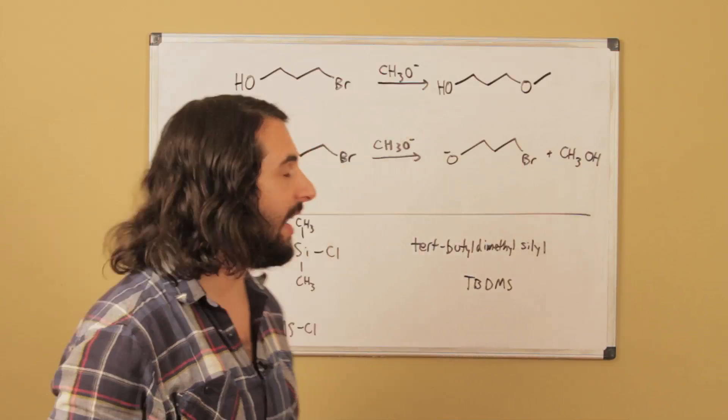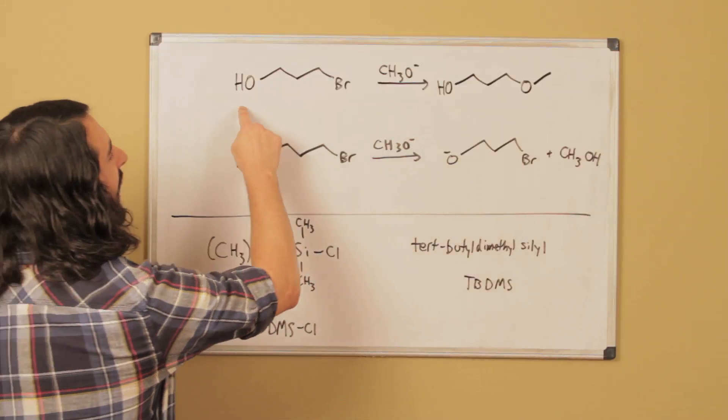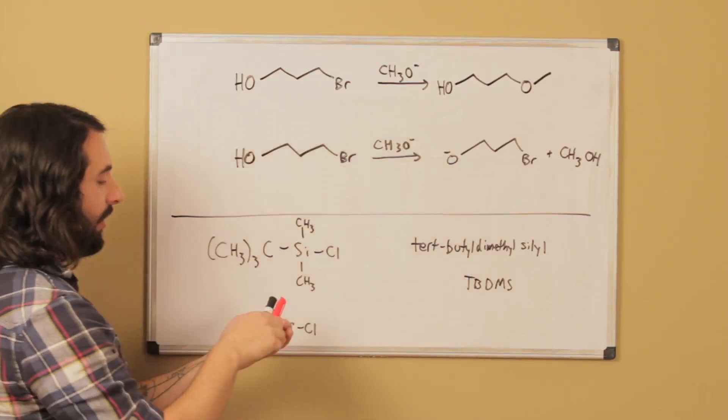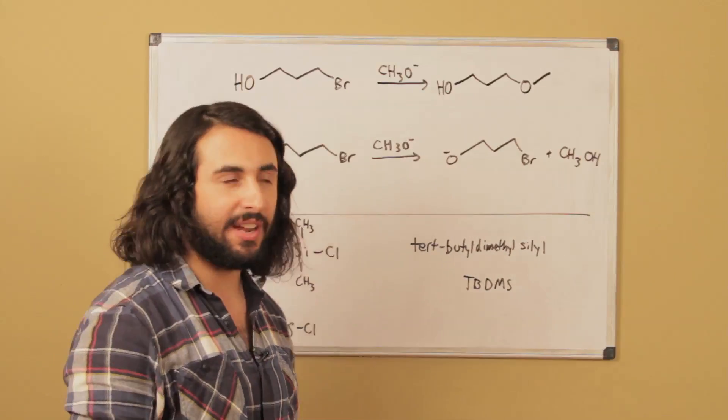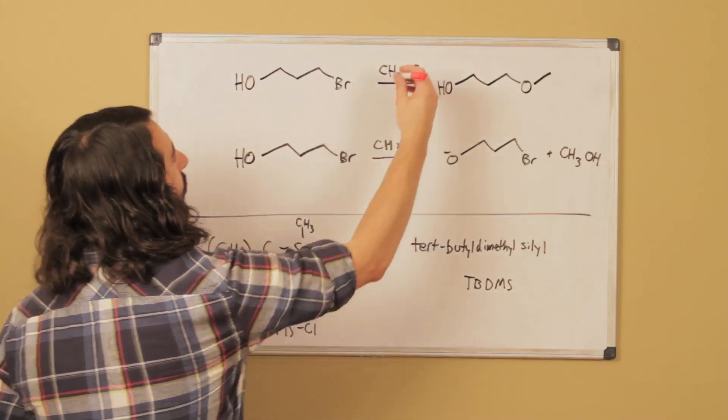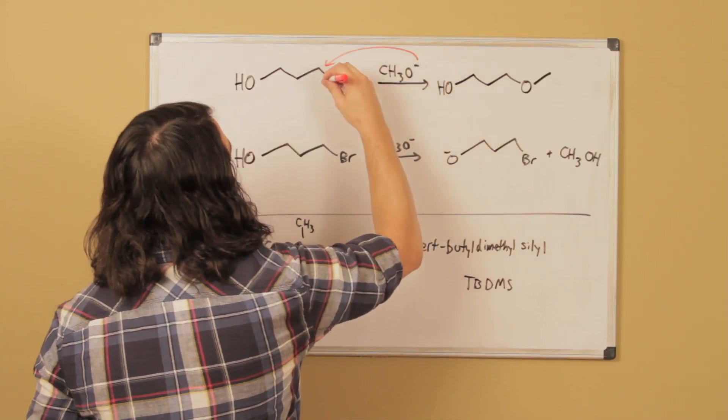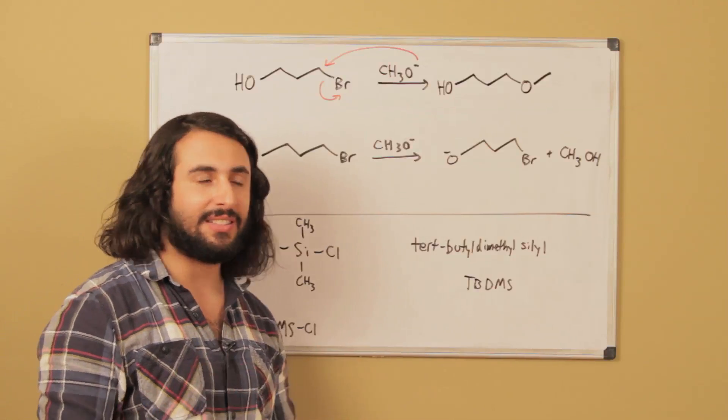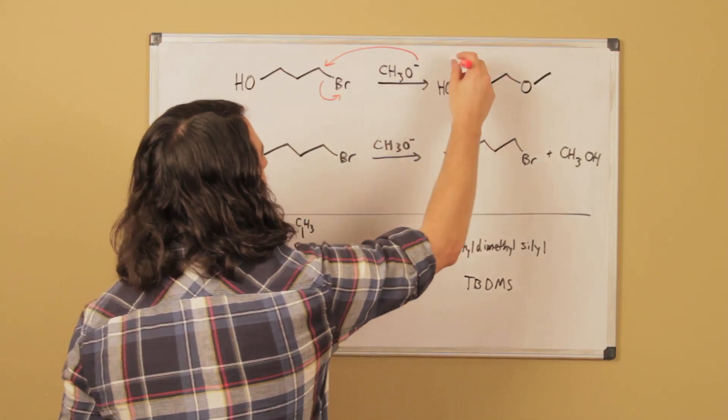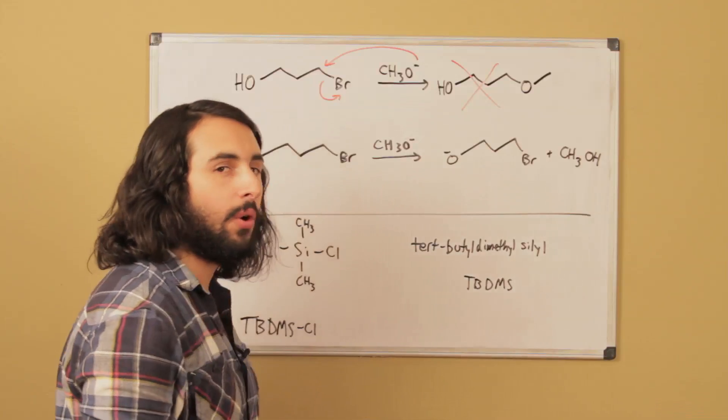Let's revisit the SN2 reaction. Say we have this substrate and we want to react with methoxide. Methoxide is good for SN2, and we have a leaving group here, so this is what we want to get. That seems like it's going to work, but actually this is no good.